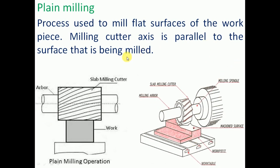The first milling operation is plain milling — the process used to mill flat surfaces of the work piece. The milling cutter axis is parallel to the surface to be milled. The milling cutter is placed on the arbor, and the work piece is fed under it to produce a flat surface. The work piece is fixed in the vice, and the rotating milling cutter on the arbor produces the flat machined surface.